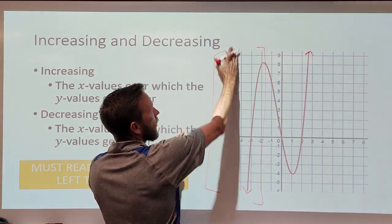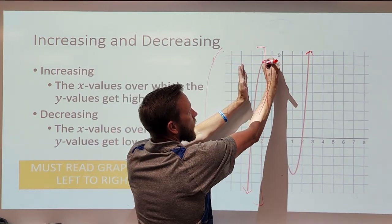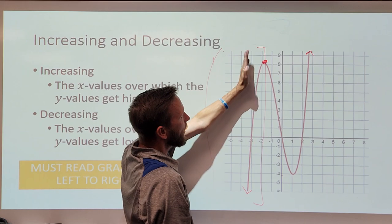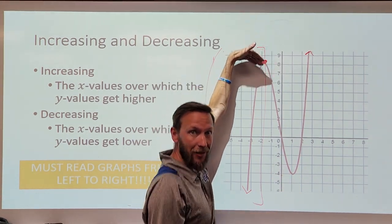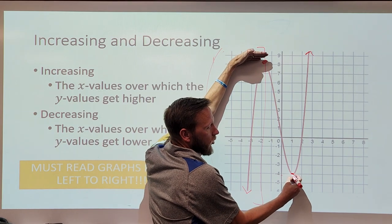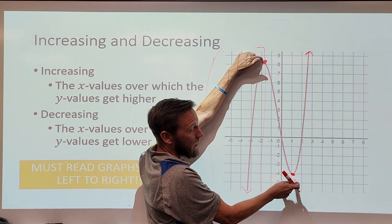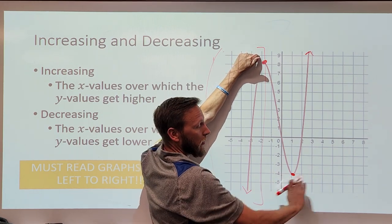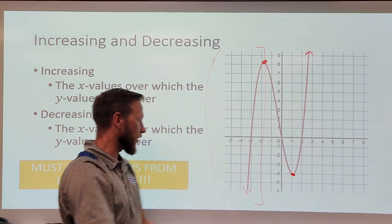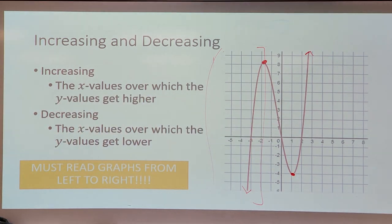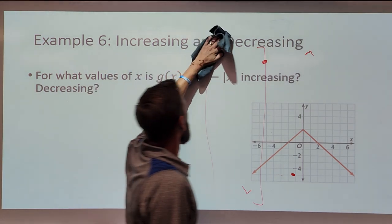This graph is increasing from negative infinity all the way to that local maximum. Then it's going to decrease from this local max — not the actual max, not all the way to infinity — to this local minimum. It's decreasing from left to right until it gets there; at that point it's neither increasing nor decreasing. Then from that point on, it's going to be increasing indefinitely.